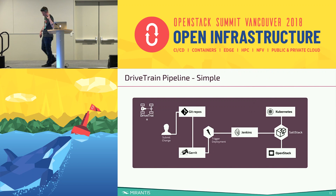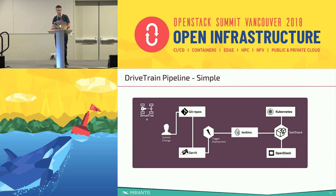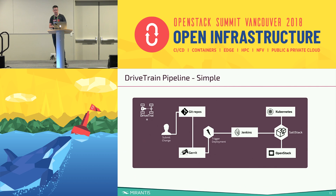For the demo, I'm going to use a fairly simplistic pipeline without a lot of third-party integrations. I'm going to submit a change as an operator to a Git repository storing the stateful configuration of the cloud we've deployed, review that change in Gerrit, and that's going to trigger a Jenkins job that will roll it out to the OpenStack cloud using Salt.